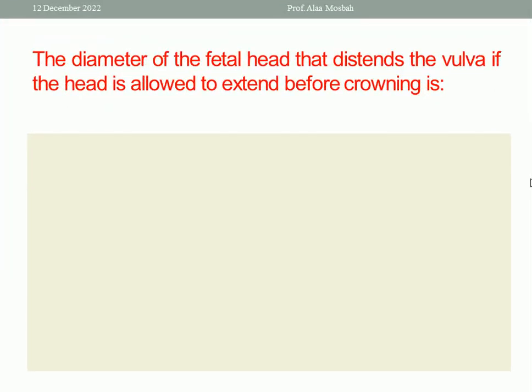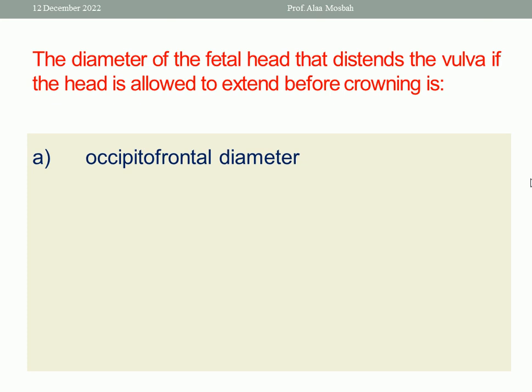Let's go to the next. The diameter of the fetal head that extends through the vulva, if the head is allowed to extend before crowning, is — A: occipitofrontal diameter. B: suboccipitofrontal diameter.